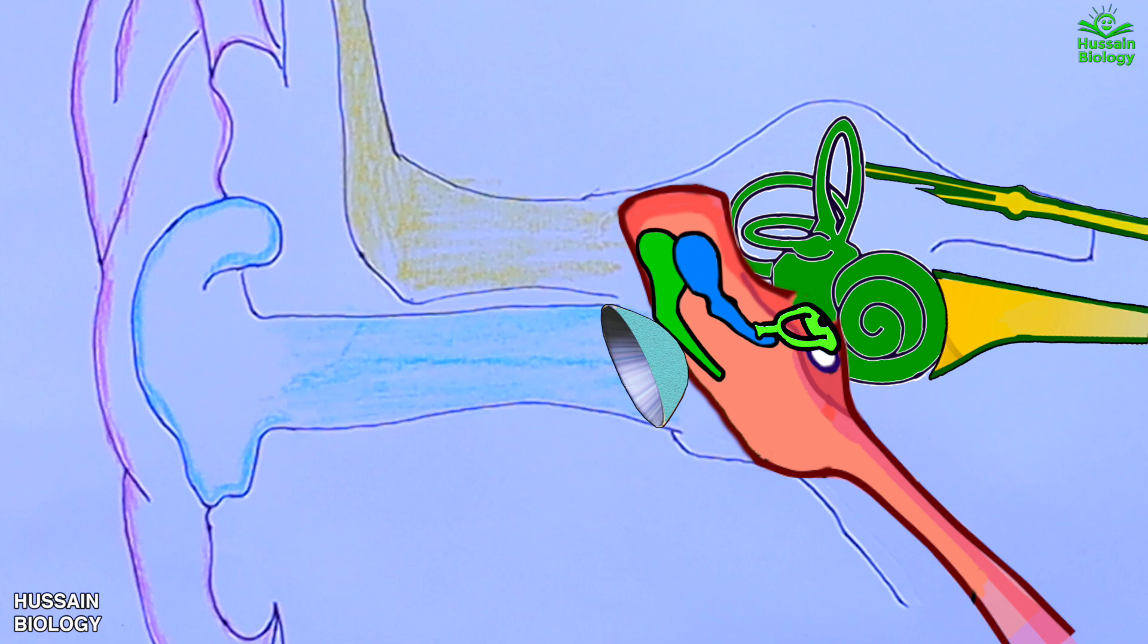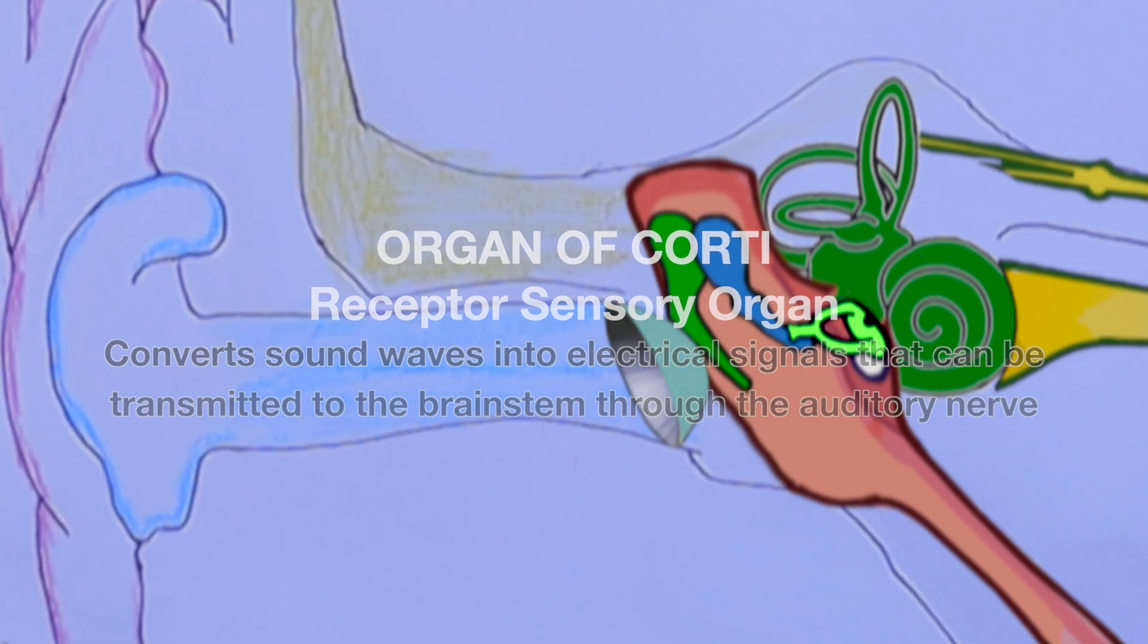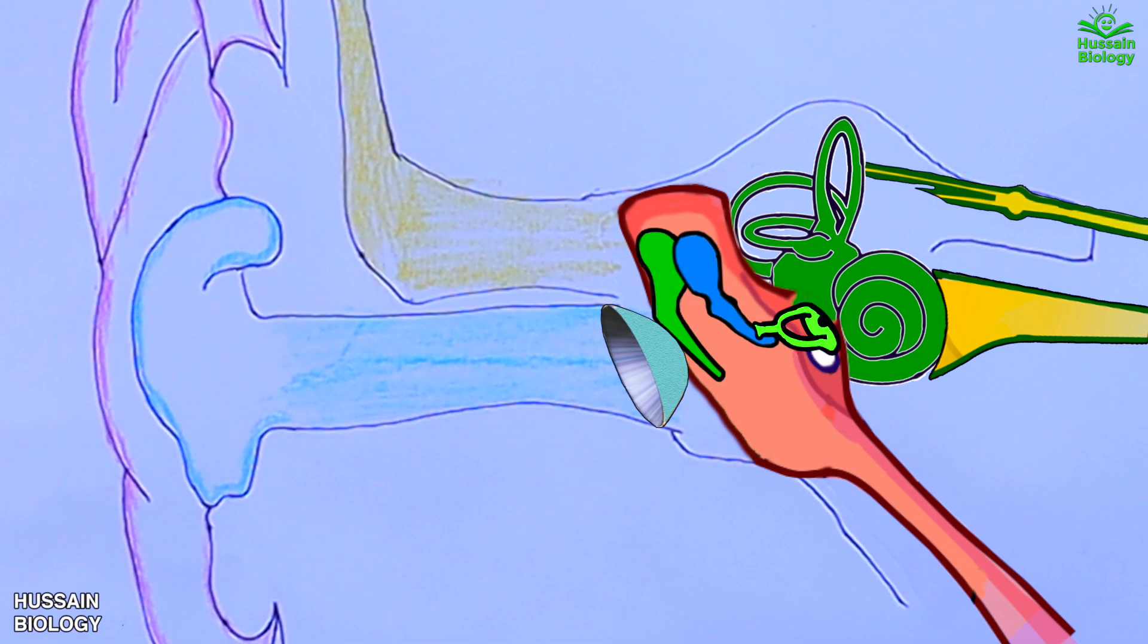It must be noted that mammalian cochlea has the organ of Corti. Precisely, it's located in the scala media of the cochlea of inner ear between the vestibular duct and the tympanic duct, and is composed of mechanosensory cells known as hair cells.